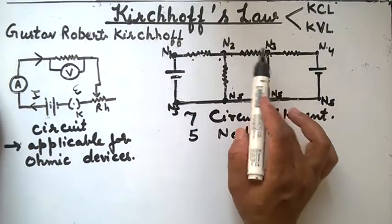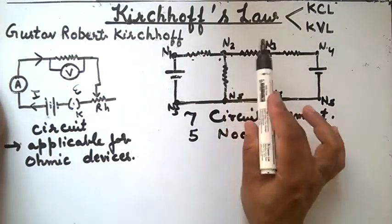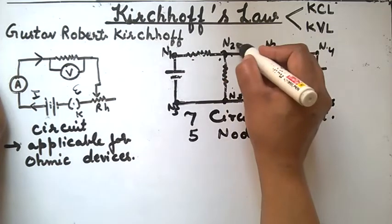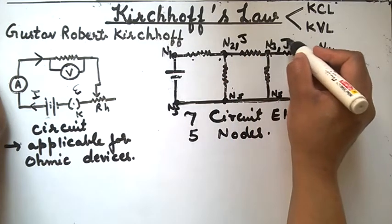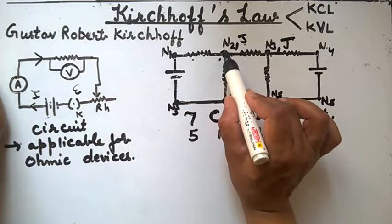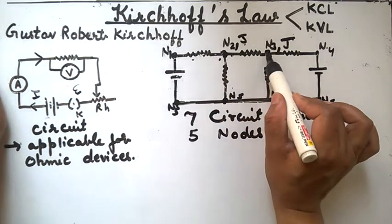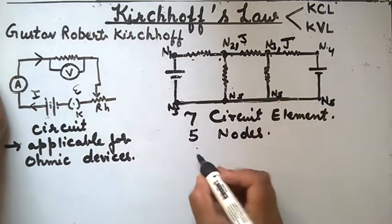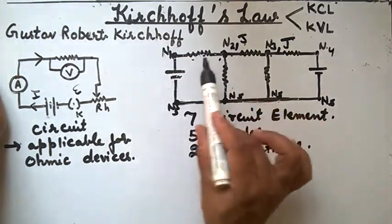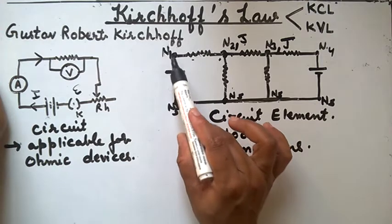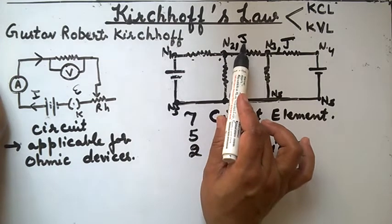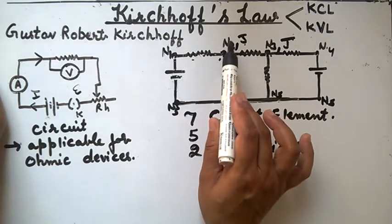How many junctions are there? A junction is a point where three or more elements are connected. Here we can identify two junctions. When two circuit elements are connected at a point it is a node, and when three or more elements are connected it is a junction. Therefore, a junction can be a node but a node cannot be a junction.